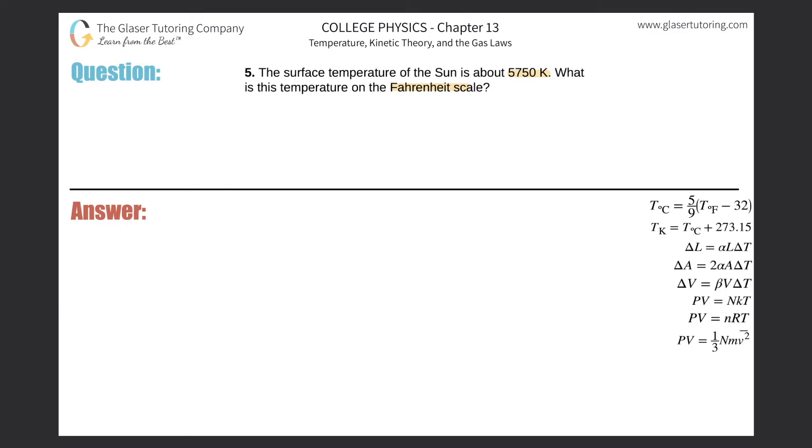All right, so we need a formula that solves for Fahrenheit first of all. The Fahrenheit is found in the first formula over here on the right hand side. It says that the Celsius temperature will be equal to five ninths times the Fahrenheit temperature minus 32.